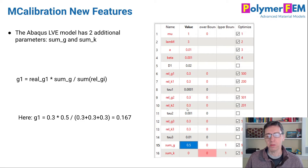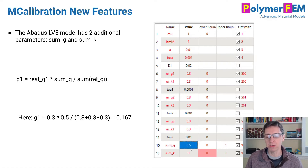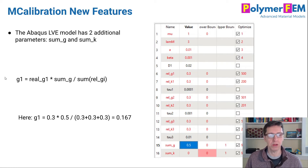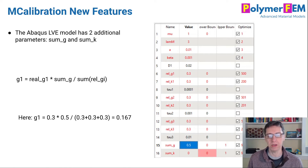The g terms need to sum to less than one — that's how you specify how much stress actually relaxes. This can be problematic during optimization, so we introduced a parameter at the end specifying what they should add up to. For example, if the raw values add up to 0.9 but you set the target to 0.5, mCalibration will scale them back so their sum equals 0.5 while preserving their relative ratios. This works for both shear relaxation and bulk relaxation, and will help tremendously when calibrating these models.